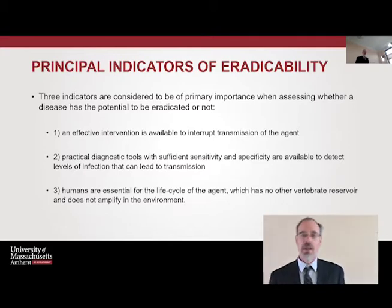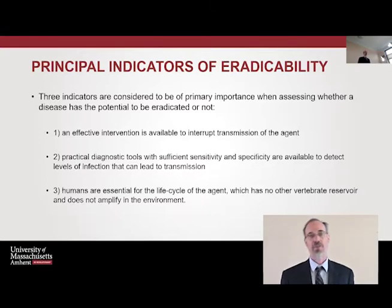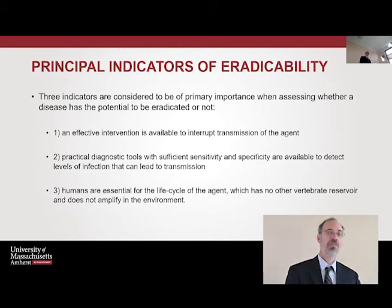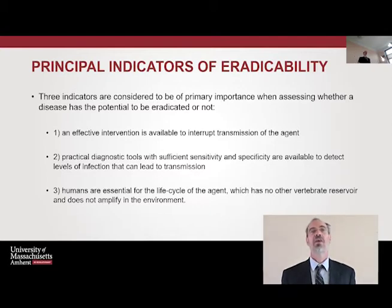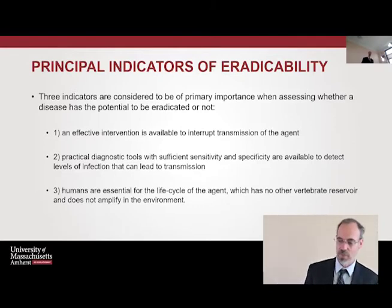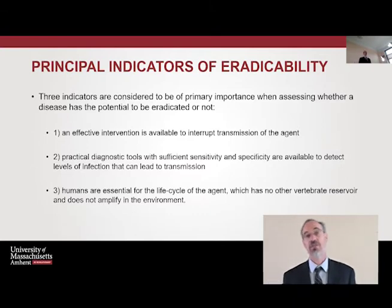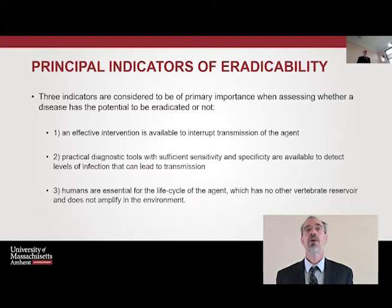The principal indicators of eradicability: first, an effective intervention must be available to interrupt transmission — there has to be some method of prevention, a vaccine, or a treatment to prevent the disease from transmitting again. Second, practical diagnostic tools with sufficient sensitivity and specificity must be available to detect levels of infection that can lead to transmission. We have to be able to detect cases and know who is infected before we can isolate them and prevent further transmission.